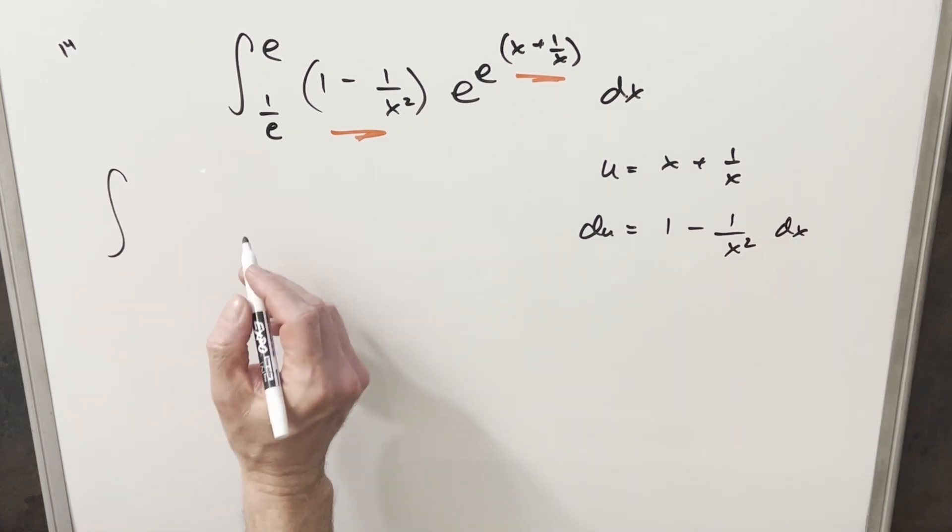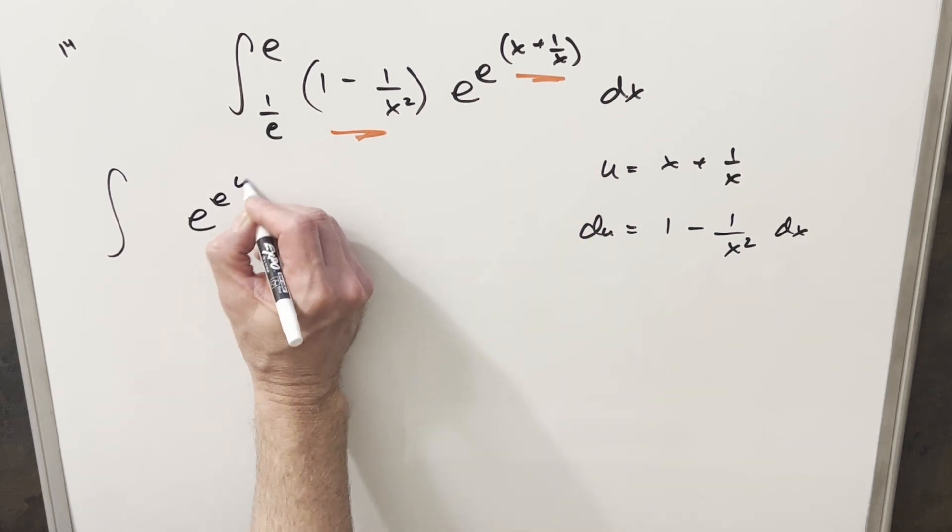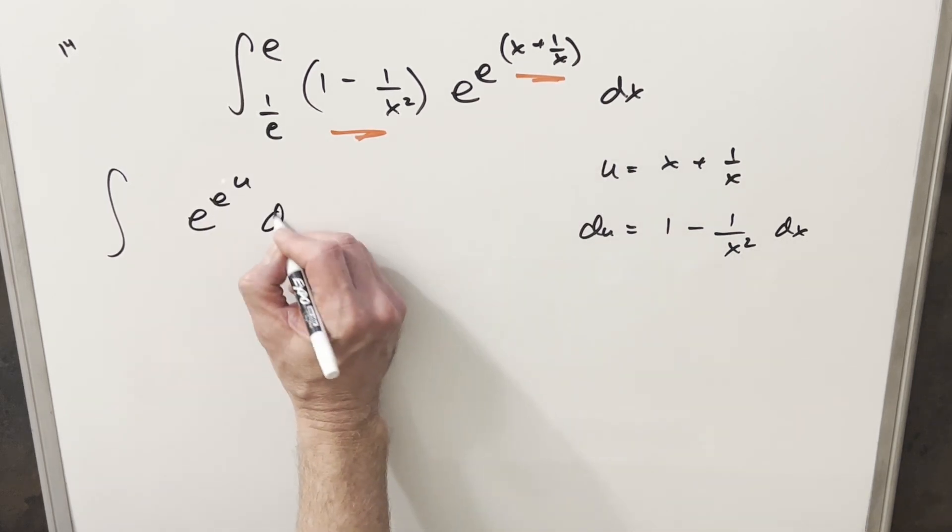So we'll go ahead with this substitution. Again, this and this is our du, so this is just going to become e to the e to the u, and then everything else is du.